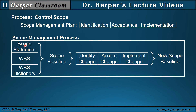The scope management process starts with a scope statement, the work breakdown structure, and the WBS dictionary, which creates a scope baseline. But if change happens, you identify the change, accept it, and if it's implemented, you create a new scope baseline. The old scope baseline becomes a new scope baseline, and that needs to be communicated with the team members as the new scope baseline for the project.